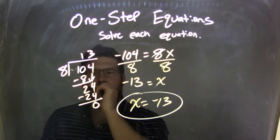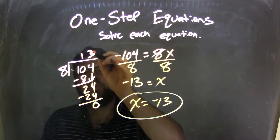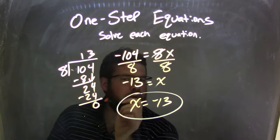8 goes into 10 one time. I put 8 down here. 10 minus 8 is 2. We brought down the 4. 8 times 3 gave me 24. So we subtract 24s, and we got 0. So we're done there with our long division.